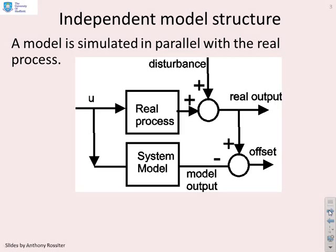Here's a typical independent model structure then. What you'll notice is we have a real process and you have an input going into that real process. And what we do is, in parallel with the real process, we run a simulation of a system model. And that gives us a model output. So whenever we get an input, we always put it into the real process and into the model. However, obviously the model is not perfect. What we do is we measure the real output by measuring the real process, compare it to the model output. And that gives us this offset term, which tells us the difference between the two.